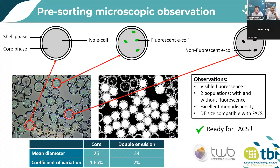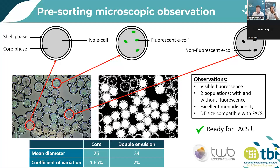After collection, double emulsions were observed by microscopy. You can see several populations: empty double emulsions containing only culture media, double emulsions with a green fluorescent signal corresponding to fluorescent E. coli, and double emulsions containing bacteria without any fluorescent signal. The produced double emulsions have a mean diameter of 26 micrometers with an external monodispersity — coefficient of variation below 2% — compatible with FACS requirements.